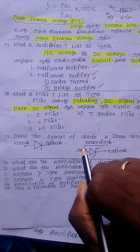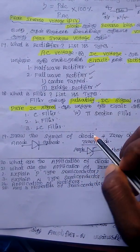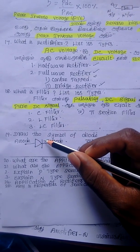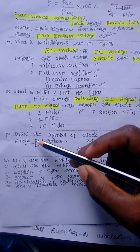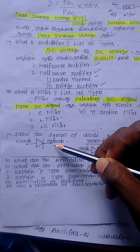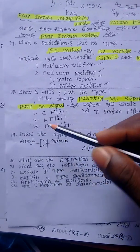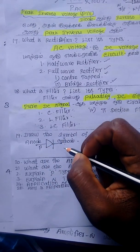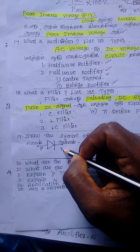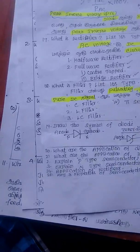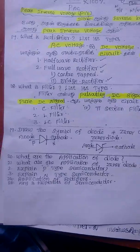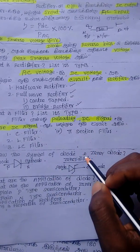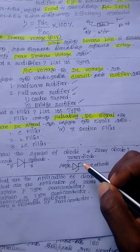Let's see the diode. A diode has two terminals: Anode and Cathode. The Anode is the P-type side and the Cathode is the N-type side. This is a Zener diode — Zener Diode has an Anode and a Cathode.